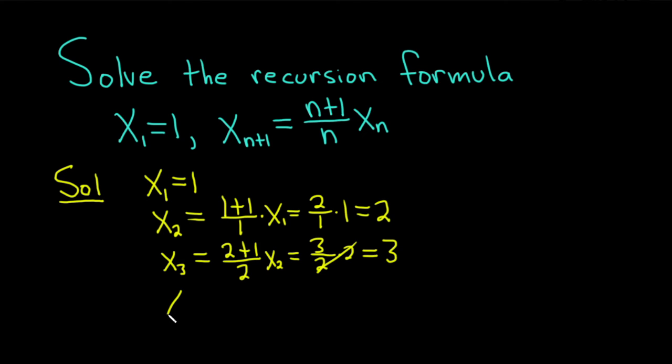So x sub 4 is equal to... Again, 4 is taking the place of n plus 1. So in this case, n is equal to 3. This will be 3 plus 1 over 3. And let's skip a step now. We know that this is going to be x sub 3. But x sub 3 is equal to 3. So this is 3. To cancel, you get 3 plus 1 equals 4. Et cetera.